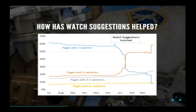Has the watch suggestions feature helped? This graph over time shows our page watches. Prior to December we were up in the 60% range for once-watched pages. After we added watch suggestions, that once-watched line dropped to below 10%, with the two-watcher pages correspondingly going up. We're hoping the once-watched pages are now even lower and that the three-to-five watcher pages are increasing as well.